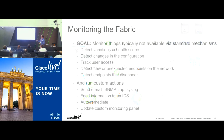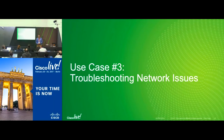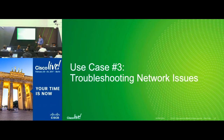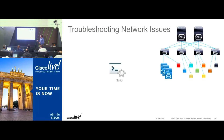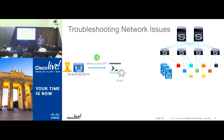The third use case is troubleshooting — a very common day-two scenario. When an interface is down or traffic is not flowing, you can write a simple script to see how many interfaces are up and what the state of each interface is — essentially a health check script, which is very commonly used within the data center. You can also search for endpoints, EPGs, or tenants to simplify operations.